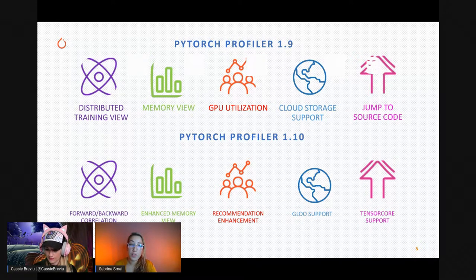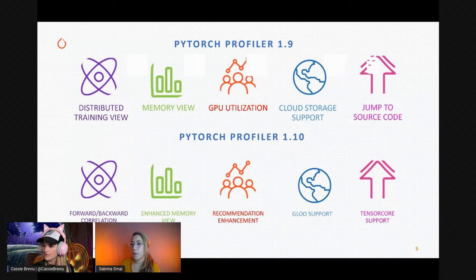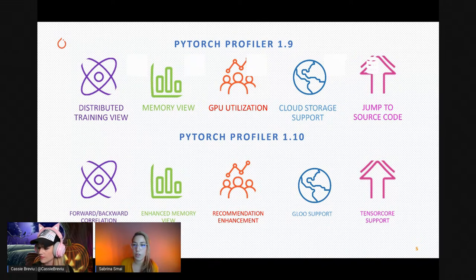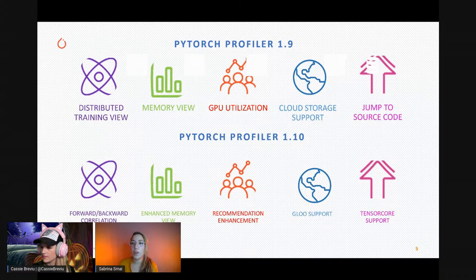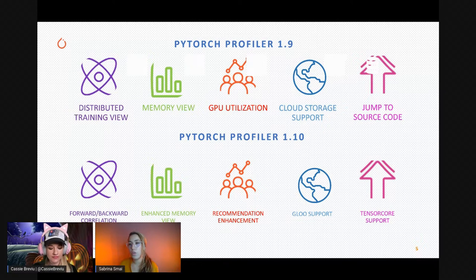In version 1.10 we added new features. The first is correlating operators in forward and backward paths, which helps map operators found in the forward path to the backward path and vice versa. These can be visualized in a trace view with details on 10-millisecond buckets, their states, and elements. The second feature enhances the previous memory view with additional statistics showing trends of memory usage and allowing you to select a span to see trends within a specified range.